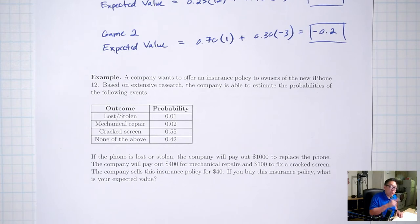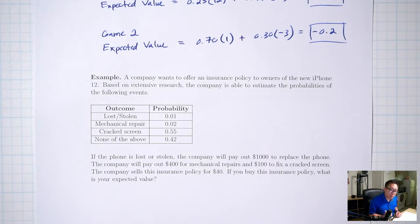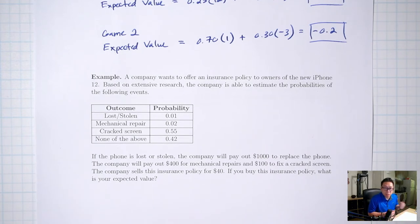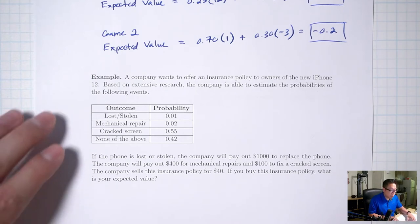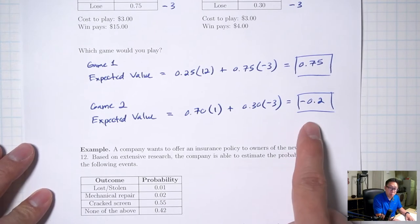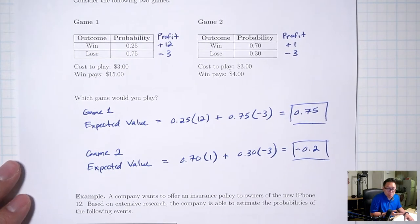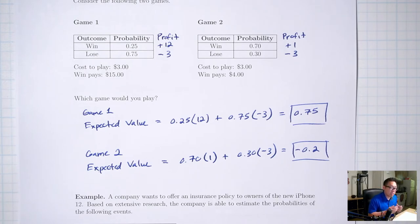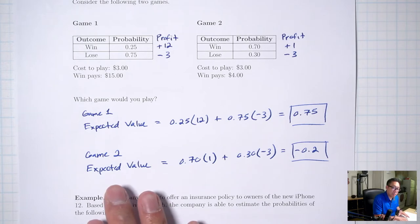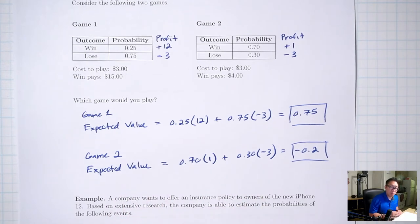From the company's perspective, whoever is selling this insurance policy is playing the game thousands of times — each time they sell it to a customer, they're playing the game. The insurance company is playing millions of times because they're selling to millions of people. So expected value is important to them. Same for a casino: if you go, you might not play a lot, but the casino is playing with many millions of people, so the expected value is important to the casino.